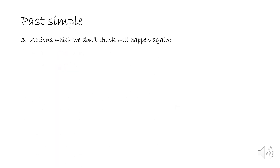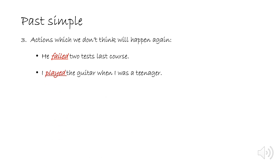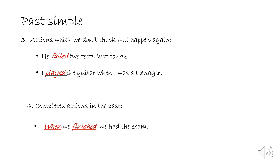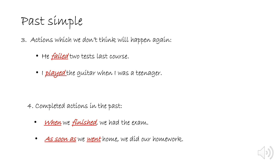The third situation is with actions which we don't think will happen again. For example: 'He failed two tests last course' — we expect he won't fail again. 'I played the guitar when I was a teenager' — meaning I stopped playing. The fourth situation is with completed actions in the past: 'When he finished, we had the exam,' and 'As soon as we went home, we did our homework.'